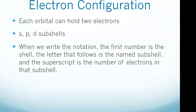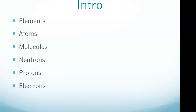Now let's look at electron configuration. Each orbital can hold two electrons. The s subshell contains one orbital and can therefore hold only two electrons. The p subshell contains three orbitals and can hold six electrons. The d subshell contains five orbitals and can hold ten electrons.